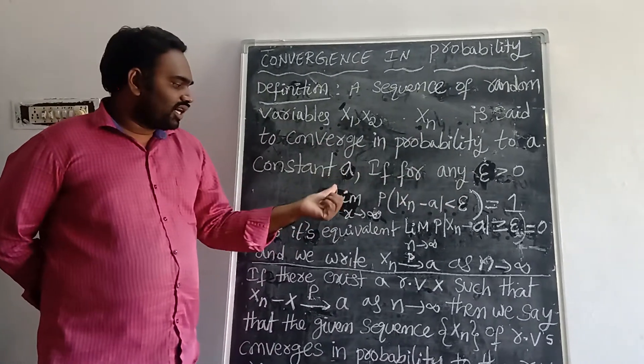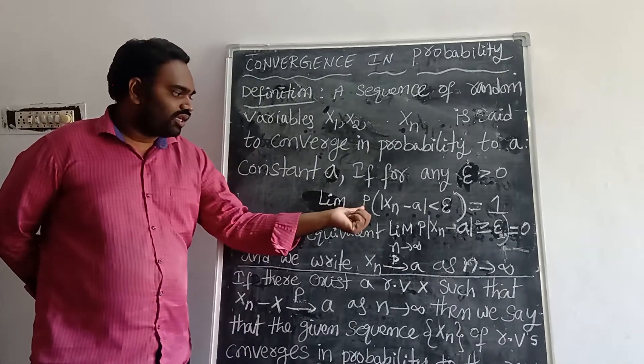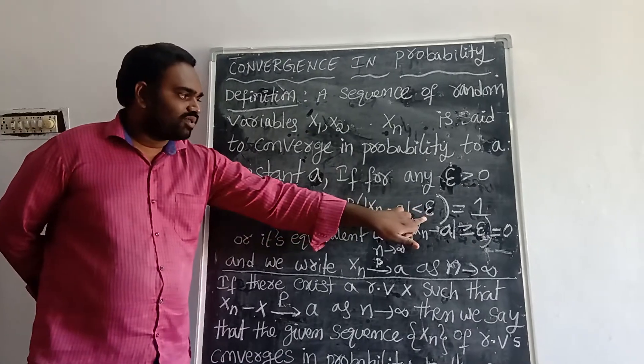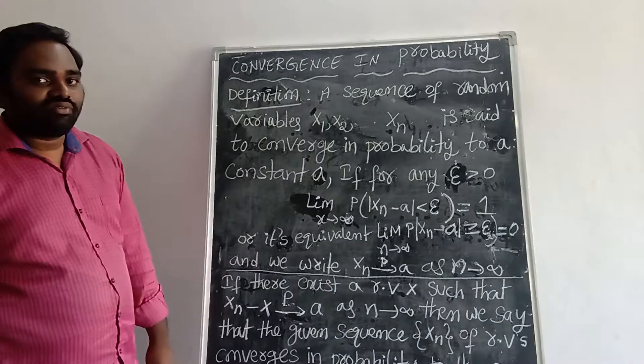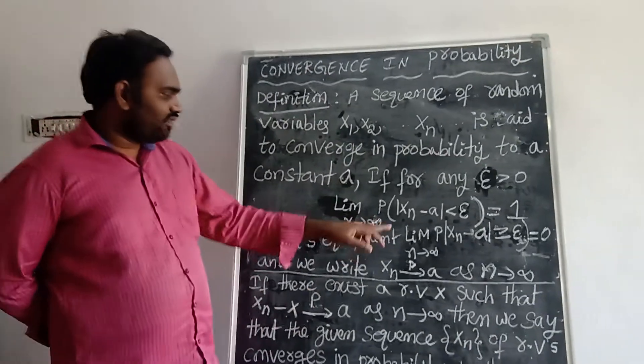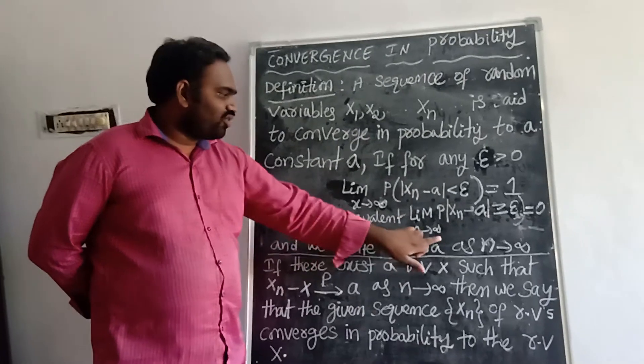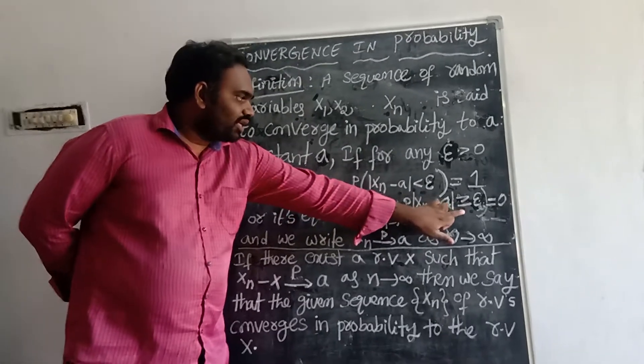zero. The condition is: limit as n tends to infinity of probability of |Xₙ - a| less than epsilon, that value is equal to 1. Otherwise, we are taking one more condition. It's equivalent to: limit n tends to infinity, probability of Xₙ - a greater than or equal to